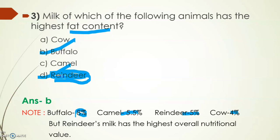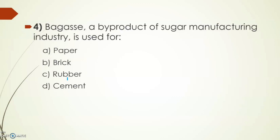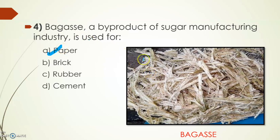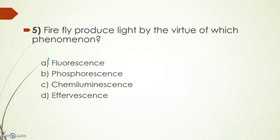Moving on to the next one: bagasse, a byproduct of sugar manufacturing industry, is used for what? The options are paper, brick, rubber, and cement. Its answer is option A, paper. It's used in paper industry, and secondary use is for cattle food.